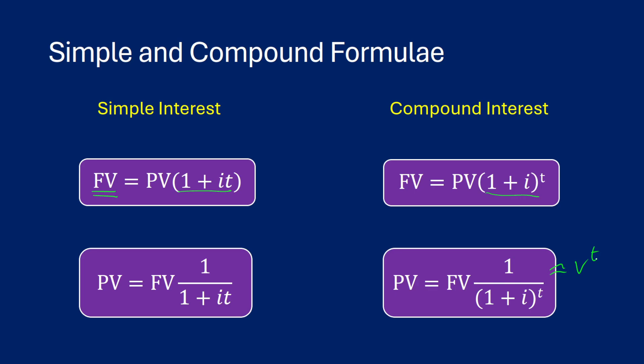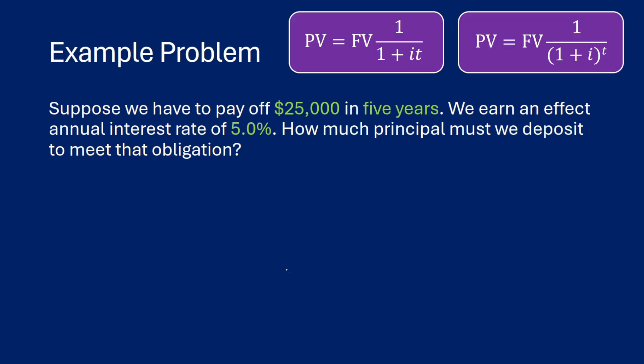The reason for that is because it would be one to the t over one plus i to the t, but one to whatever power is just equal to one. So that's why we can do that substitution with our discount factor v.